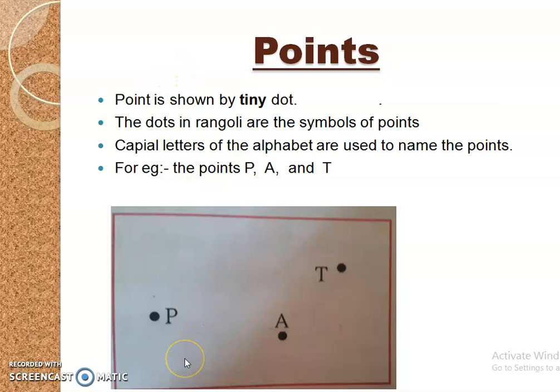What is Point? A tiny dot is called a Point. Dots in the Rangoli are symbols of points. Points are denoted by capital letters from A to Z. We can use any alphabet from capital A to Z.